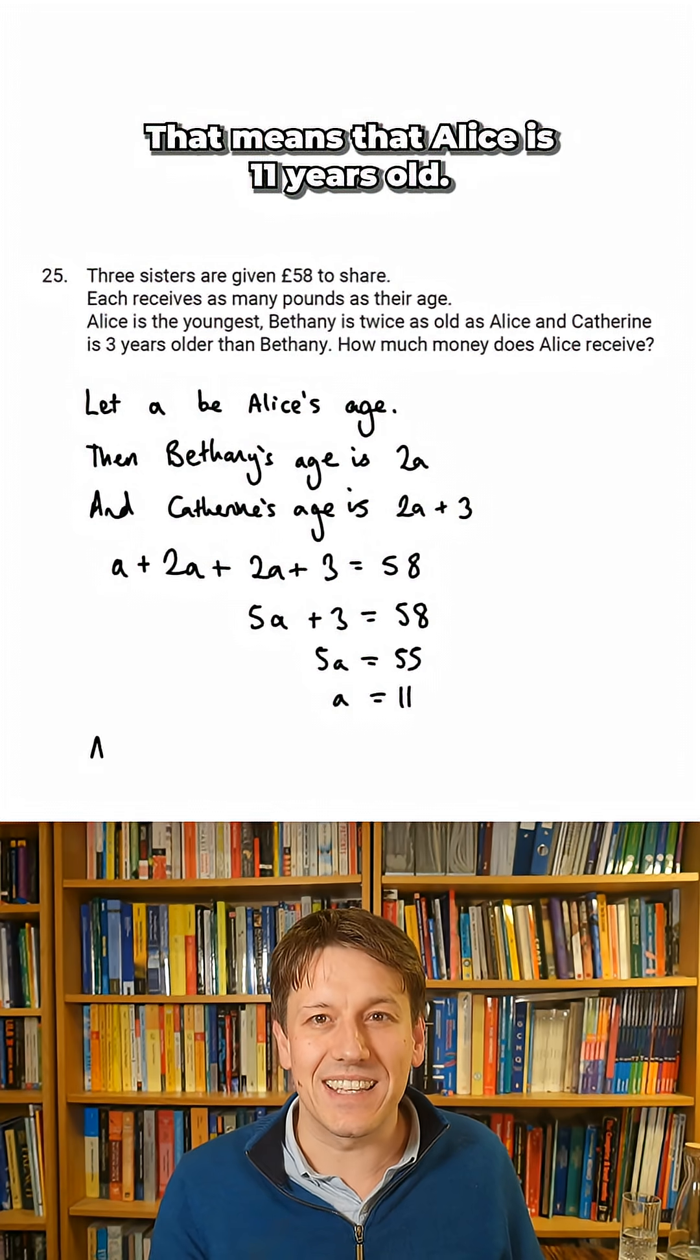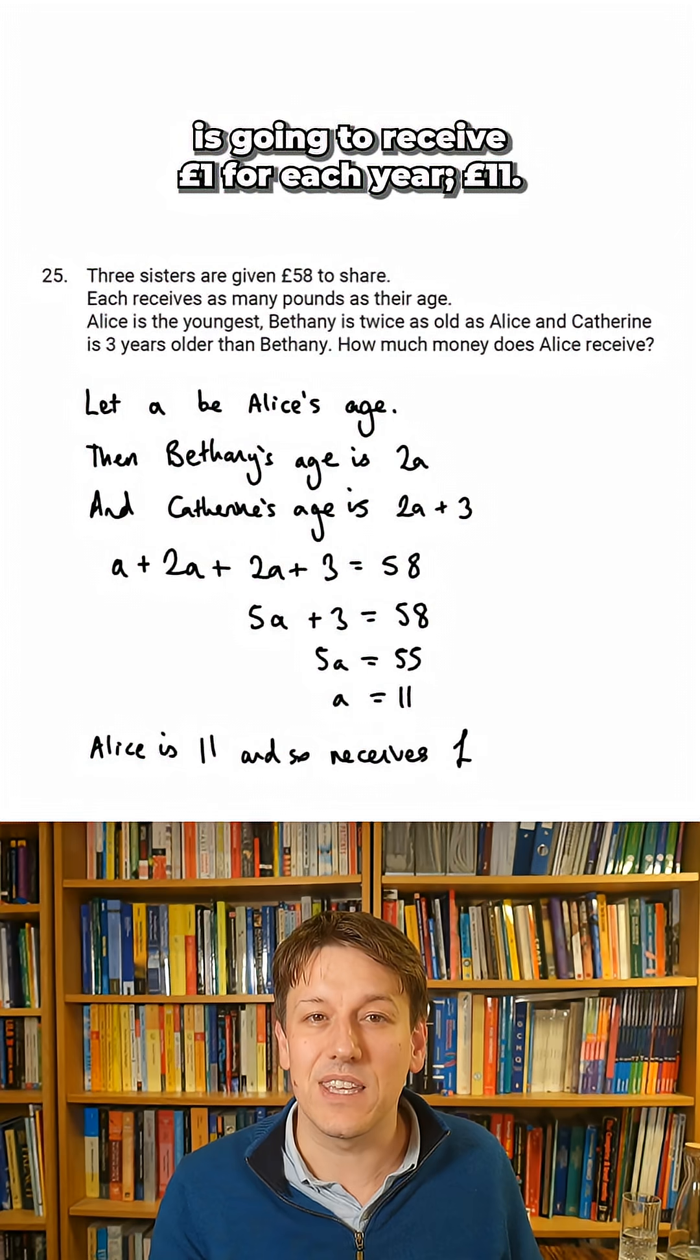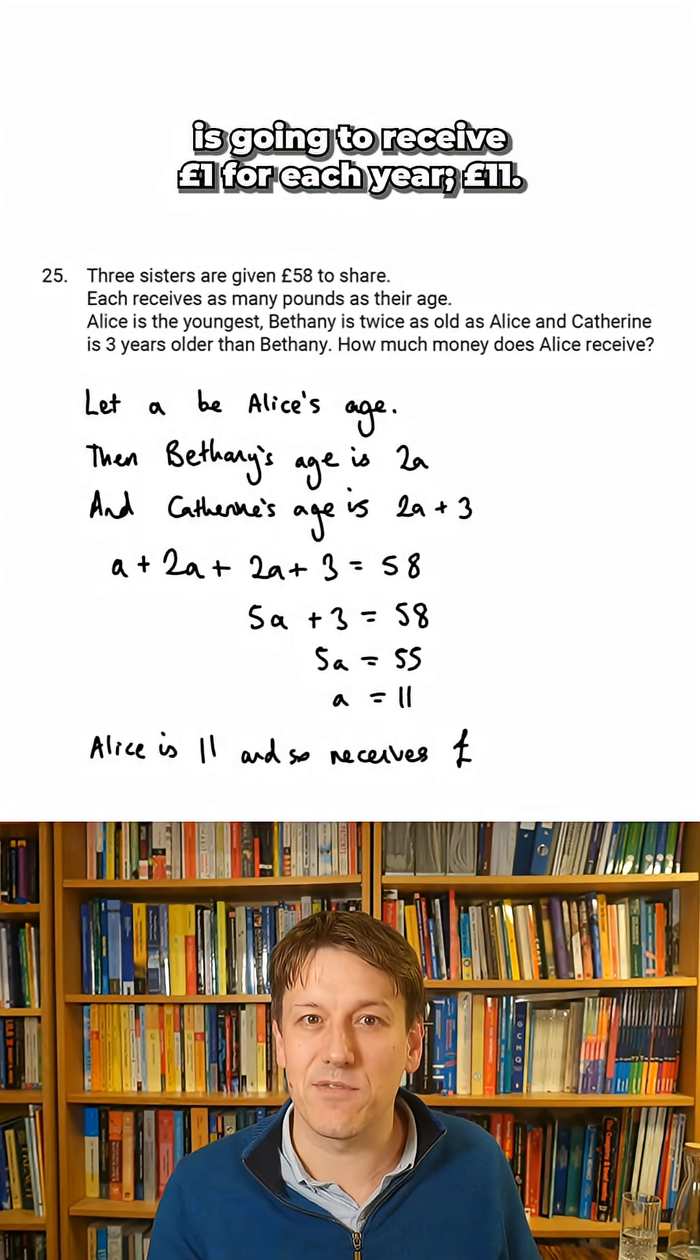That means that Alice is 11 years old, and so Alice is going to receive £1 for each year, £11.